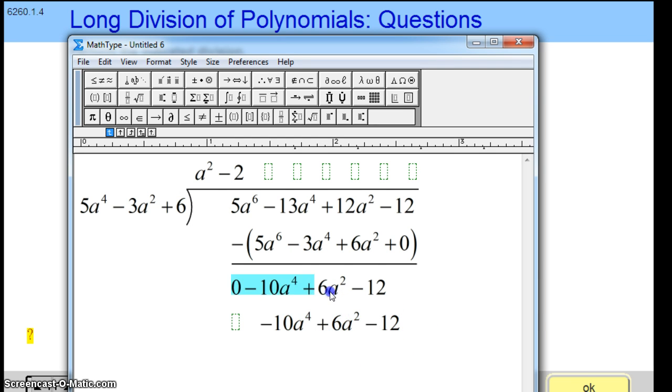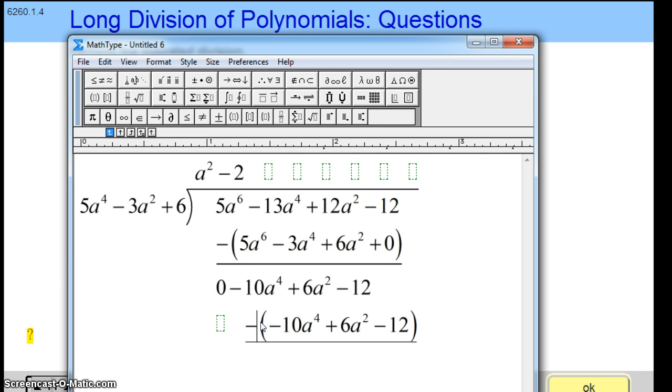this is exactly the same as what we have above. And because we're subtracting this entire thing, anything minus itself is zero. If you want to go through the math and distribute the negative and do each one, that's fine. Minus 10a to the fourth minus minus 10a to the fourth is zero. 6a squared minus 6a squared is zero. Minus 12 minus minus 12 is zero.